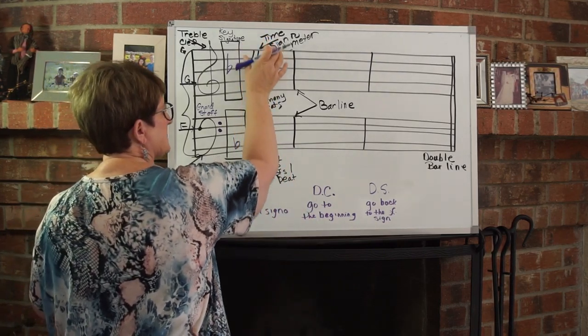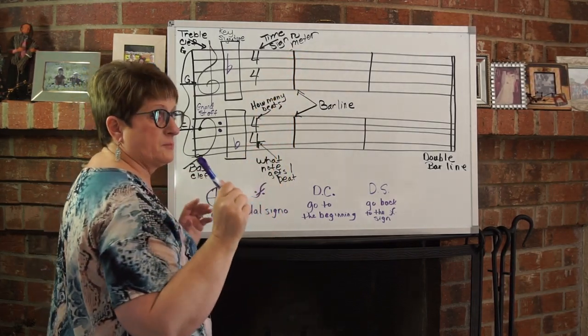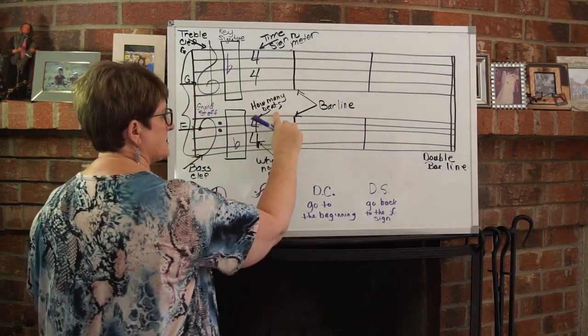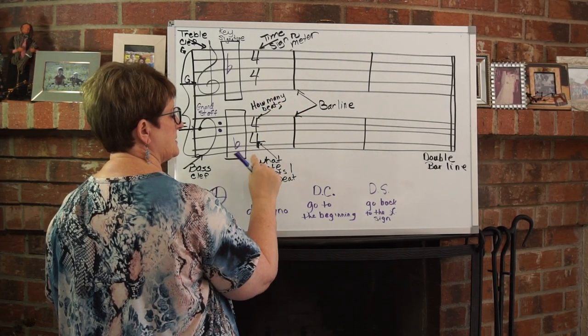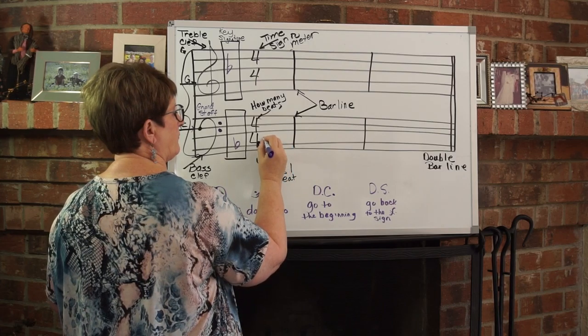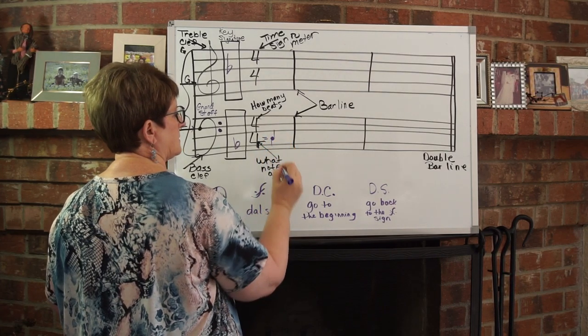Then our next space is our meter sign or our time sign. And what do the numbers tell you? The top number tells you how many beats in a measure. The bottom number tells you what kind of a note is equal to one beat. When there's a four in the bottom, the quarter note gets one beat.